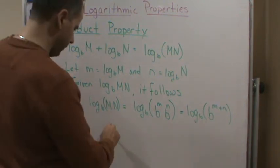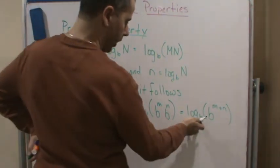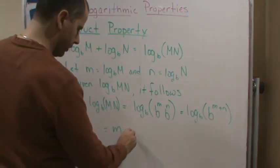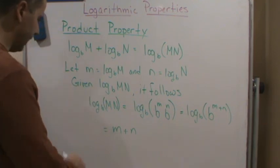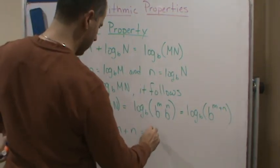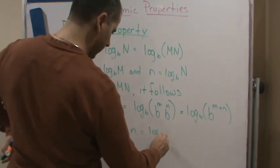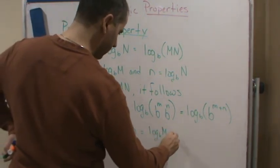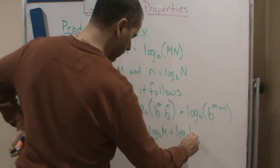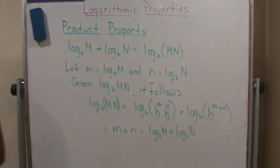And then, of course, using the inverse property, the log base b cancels with this b, and I get m plus n. But then again, m is equal to log base b of M and n is equal to log base b of N. So I get my final result: log base b of M plus log base b of N. And that's the proof.